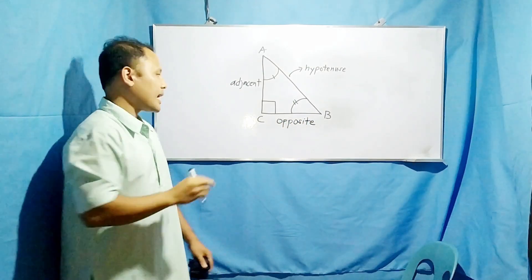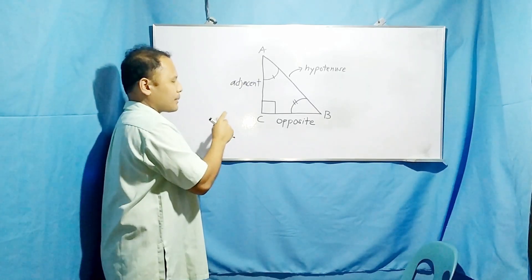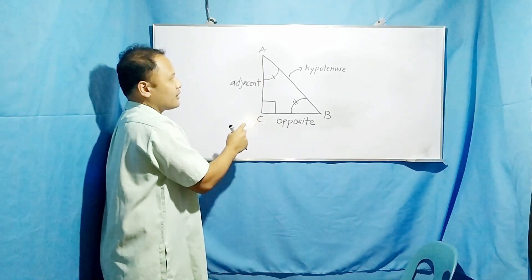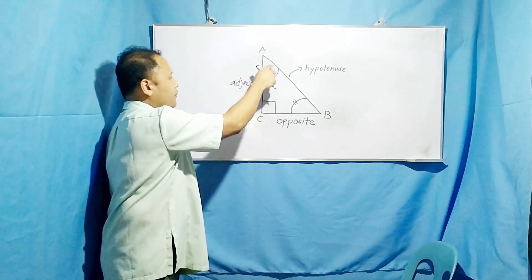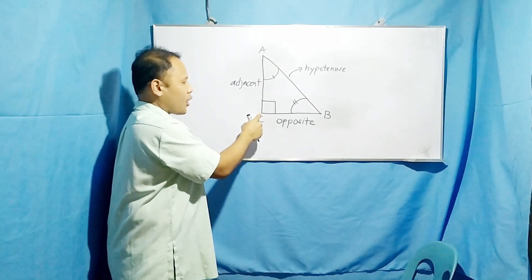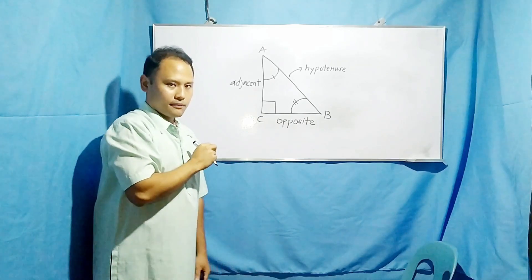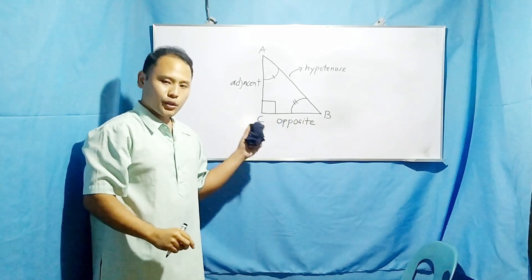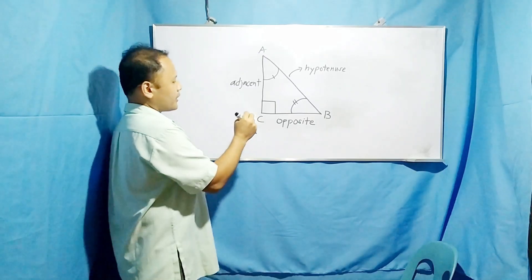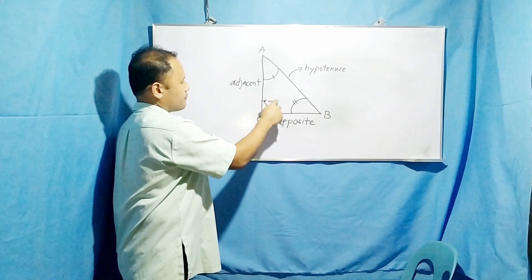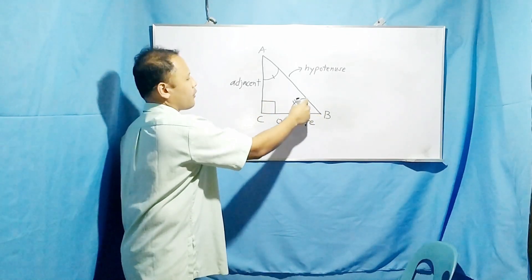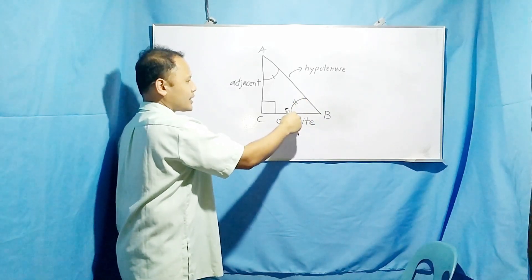Remember that adjacent can be regarded as a line segment with two endpoints such that one endpoint is the vertex of the selected acute angle, one endpoint is the vertex of a right angle. Opposite can be regarded also as a line segment connecting two endpoints such that one endpoint is the vertex of the right angle, the other endpoint is part of the acute angle which is not selected.